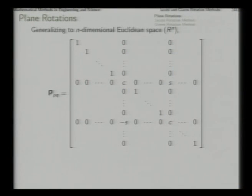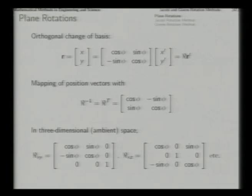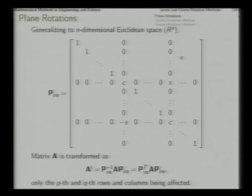This matrix P-pq is the plane rotation matrix in an n-dimensional space, representing a rotation in the plane of the p-th and q-th axes. When we apply this rotation on vectors we get: r equals R times r-prime and r-prime equals R-transpose times r. When we apply this basis change on a matrix — on a linear transformation — the new representation A-prime equals basis-matrix-inverse times A times basis-matrix. Since this matrix is orthogonal we can replace the inverse with transpose.